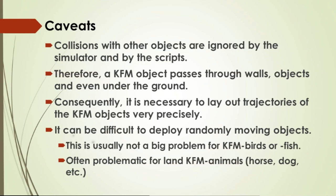Caveats: when you run scripts that have the keyframe function, collisions with other objects are always ignored by the simulator and by all scripts. A keyfm object will pass through walls, through objects, even under the region terrain. So when you want to deploy objects that move around in your region, you have to be careful in how you lay out the trajectories, otherwise your keyfm object will go through walls. It's not a problem for birds or fish, but is often problematic for animals like horses and dogs.